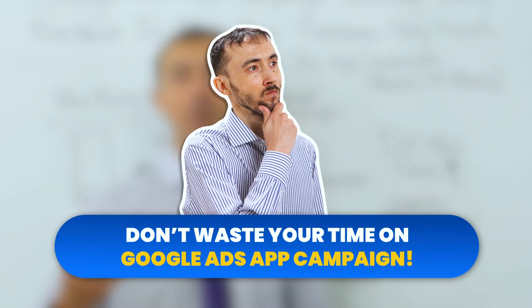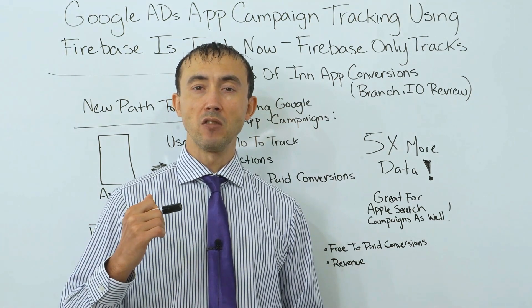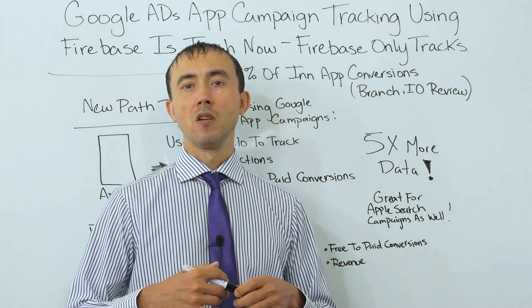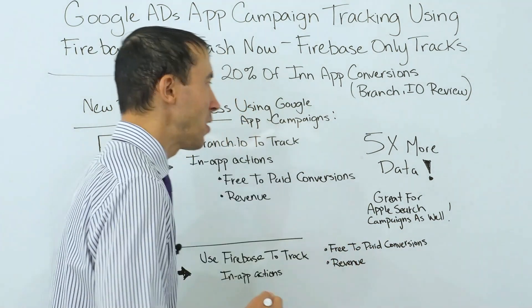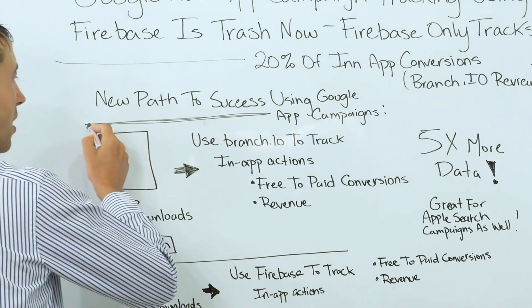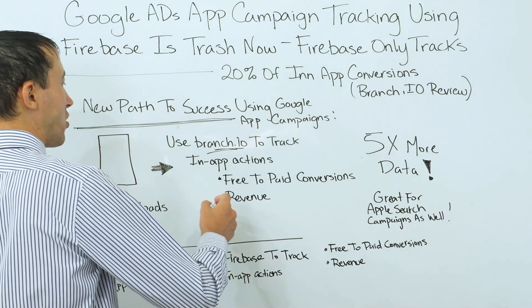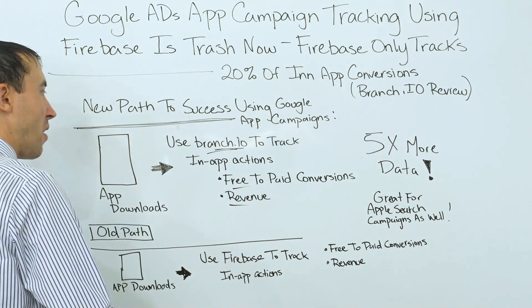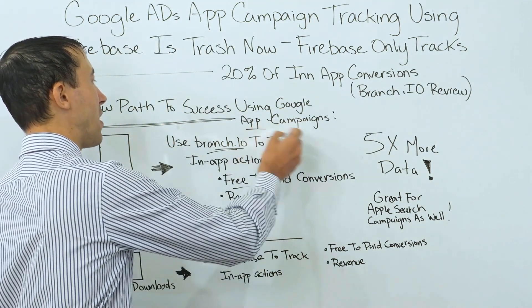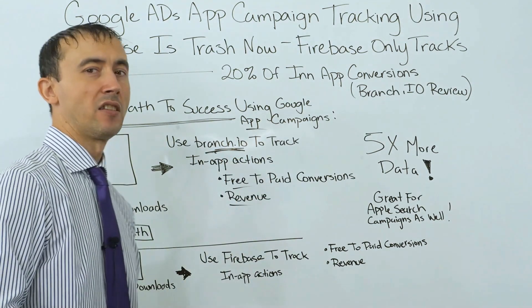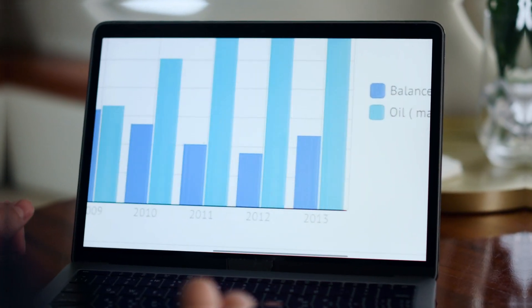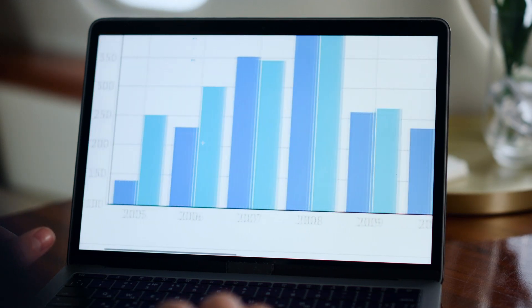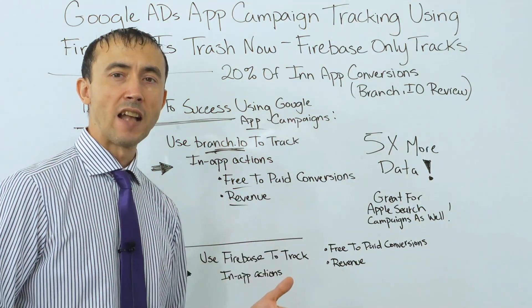Don't waste your time with Google Ads app campaigns unless you're going to get the right revenue data into the account. You could actually just try to get Android users through the Google Play Store using Firebase and you'd have the same data as always. But with Apple devices, no. The new path to success using Google app campaigns is to use a third-party service to track in-app actions — whether free-to-paid conversions, revenue, or multi-opens of the app. I recommend using branch.io to track iOS activity. Switch over to branch.io in general so you have one place to gather your data, then send that back into the Google Ads platform using their API. Import your app opens data or revenue data into Google Ads, and then the app campaigns are going to work again.